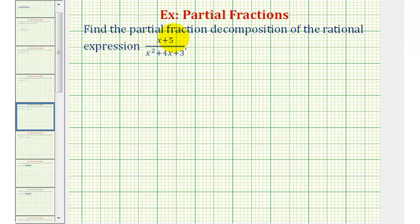Before we perform partial fraction decomposition, we need to make sure the degree of the numerator is less than the degree of the denominator. In this case, our numerator is degree one and the denominator is degree two, so this is in the correct form. If the degree of the numerator is equal to or greater than the degree of the denominator, we would start by performing long division.